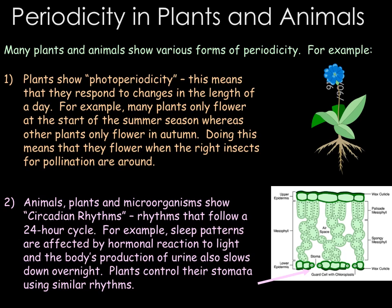Plants are also able to use circadian rhythms, and there are two major ways they do this. The first is that they use them to control their stomata. The plant's stomata need to be open during the day to carry out photosynthesis, so as light levels increase the stomata will open, allowing carbon dioxide and oxygen to move in and out of the leaf. At night, when no photosynthesis is taking place, the stomata close back up as light levels decrease, which prevents water loss from the leaf.